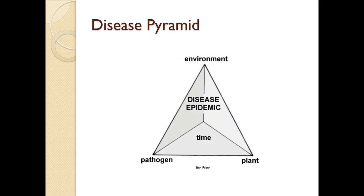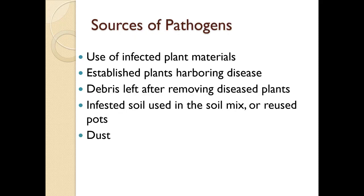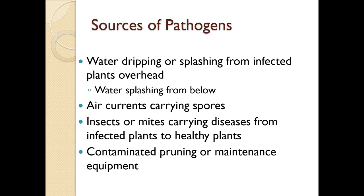A susceptible host plant may have genetics that make it prone to disease, stress is very much a factor, and certain growth stages may be more vulnerable to pathogens. Sources of pathogens include other infected plant materials, established diseased plants, debris left behind, infested soil or reused pots, dust, water dripping and splashing from infected plants, overhead watering, air currents carrying spores, insects or mites carrying diseases from infected to healthy plants, and contaminated pruning and maintenance equipment. You yourself can be a vector for certain diseases.